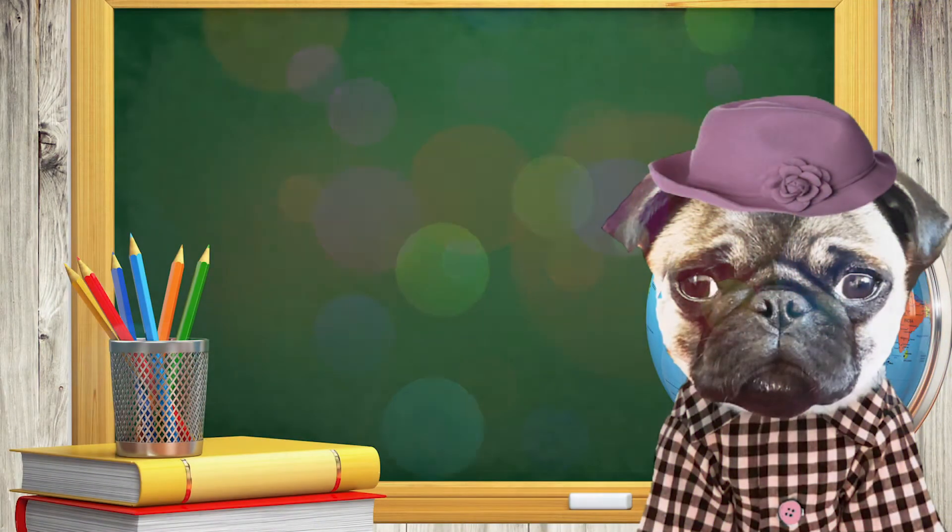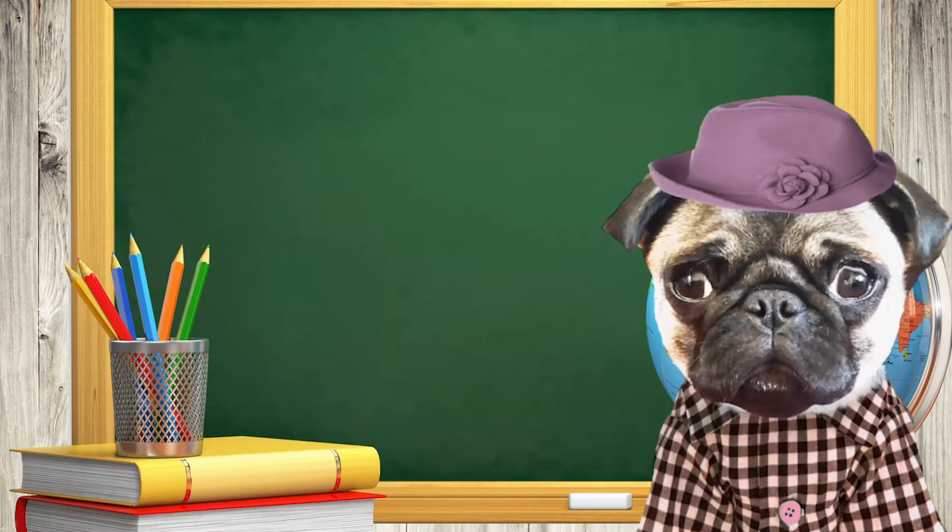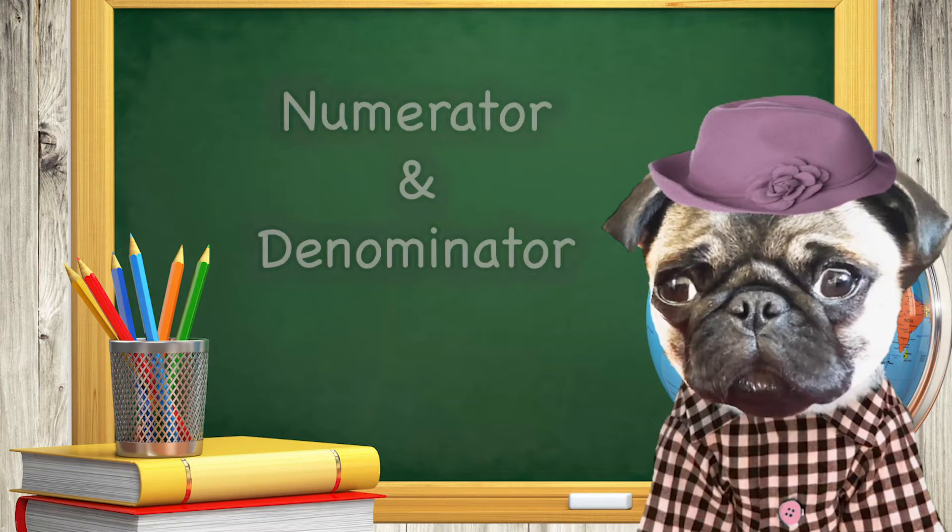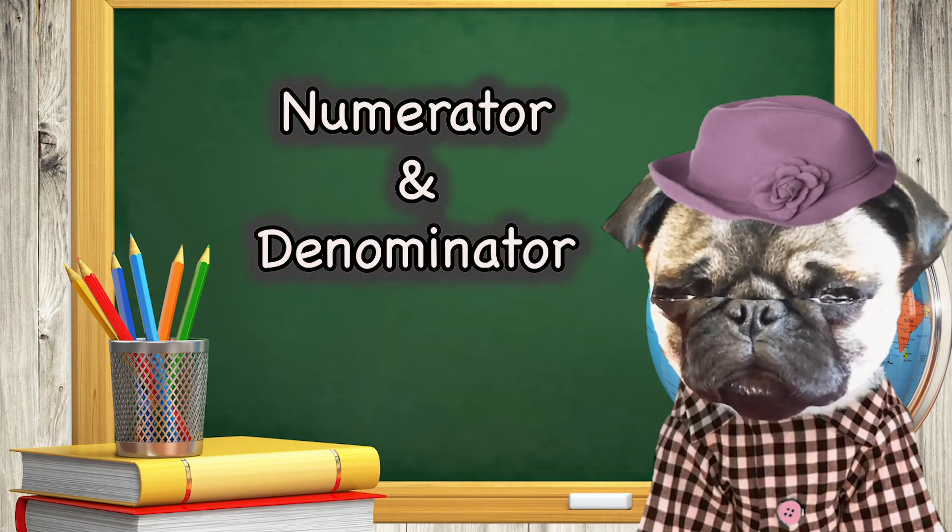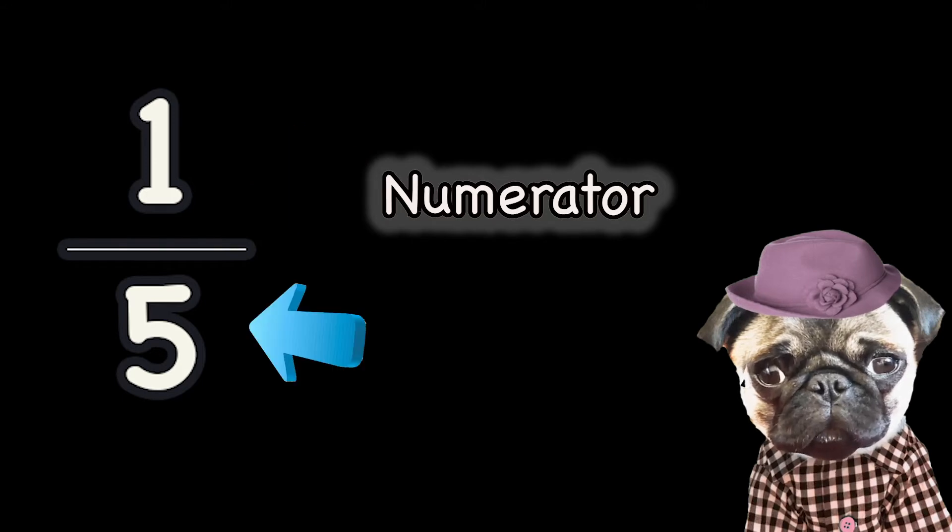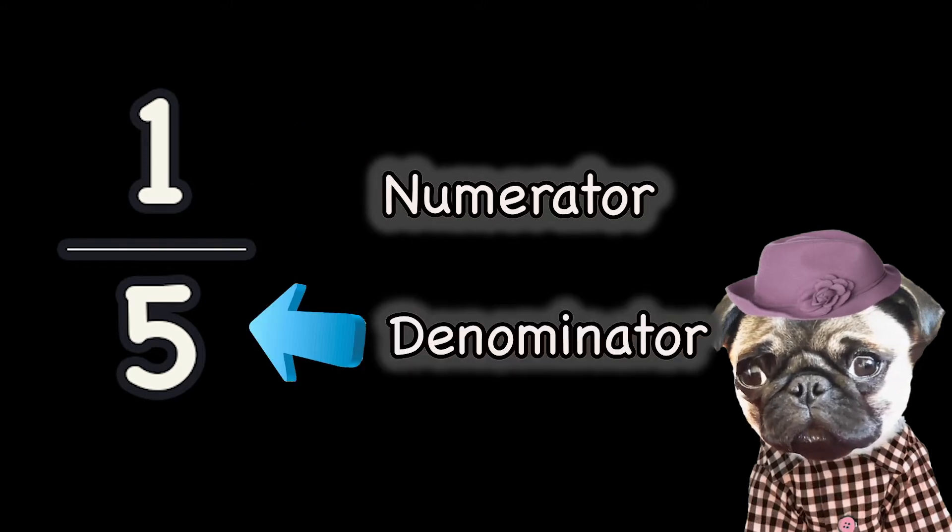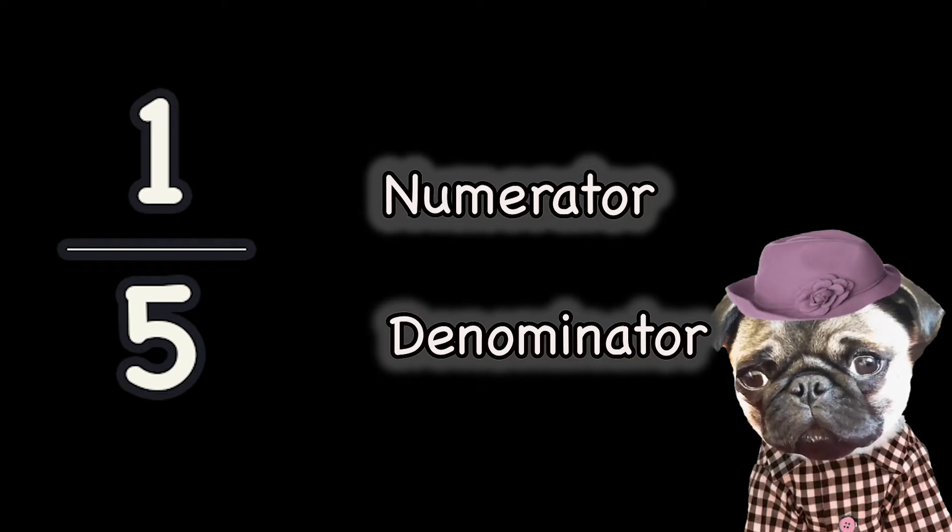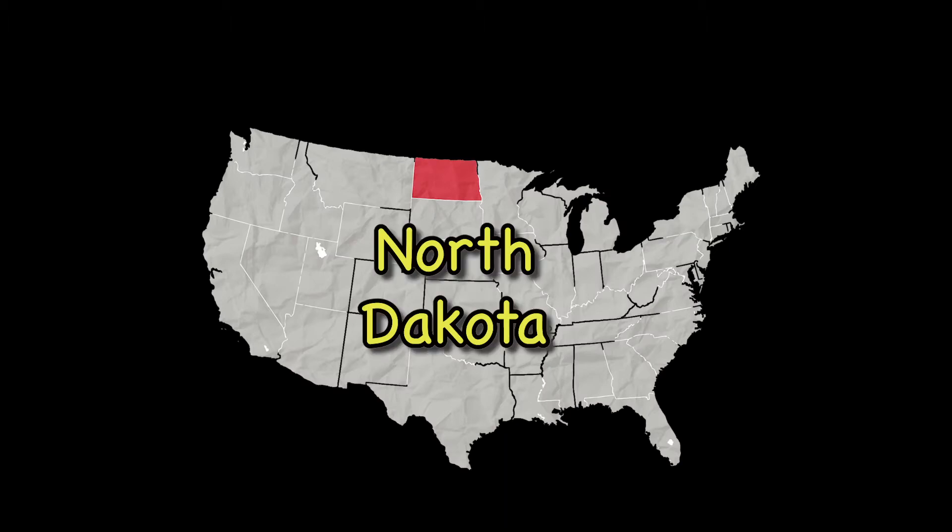Now that you know what a fraction is, it's time to learn the different parts of a fraction: the numerator and the denominator. The top part of a fraction is called the numerator. The bottom part of a fraction is the denominator. A trick to remember which one goes on top and which one goes on the bottom is North Dakota.